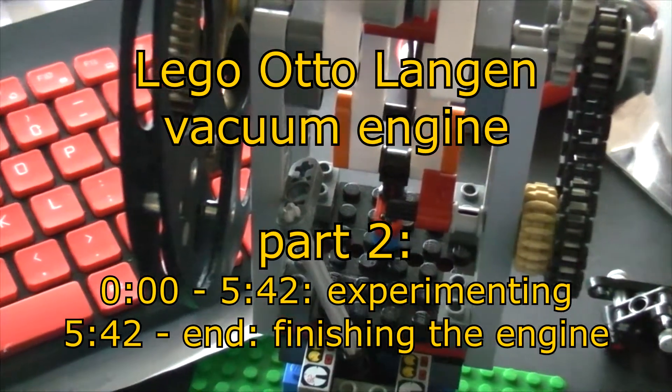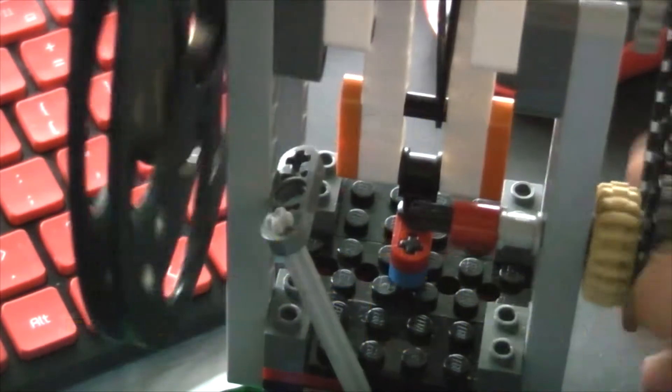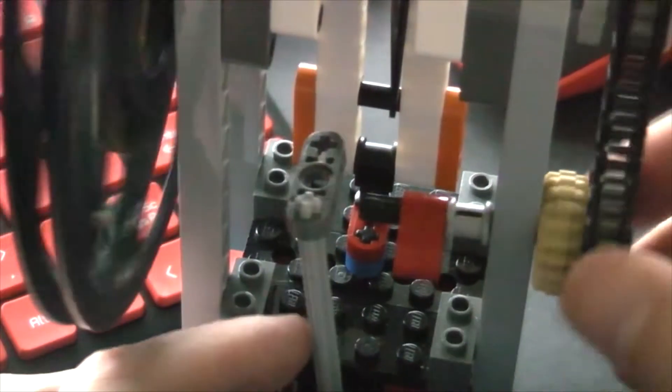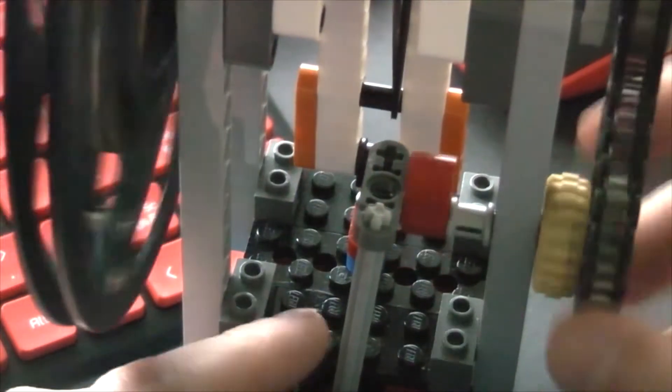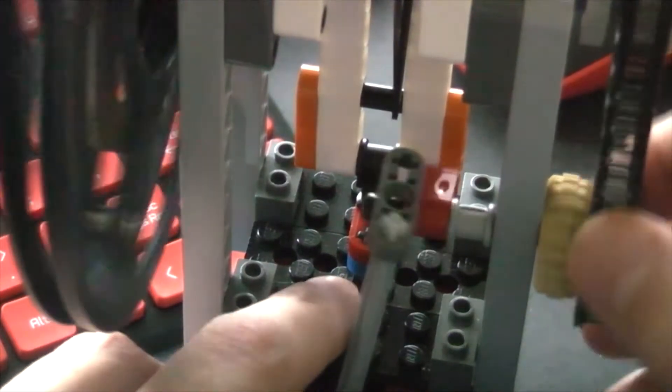Lego Ottolangen vacuum engine part 2. Time to experiment a little bit and then finish the engine with the proper valve gear as the original is. First I want to experiment a little bit though. I have some ideas to control the valve in different ways.